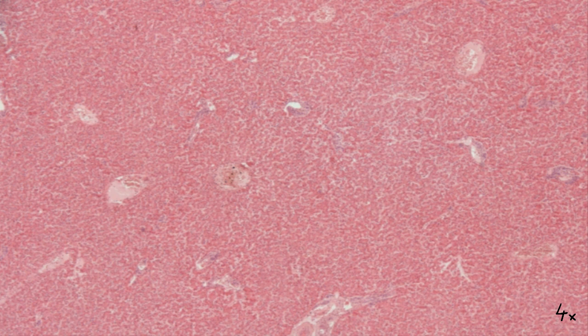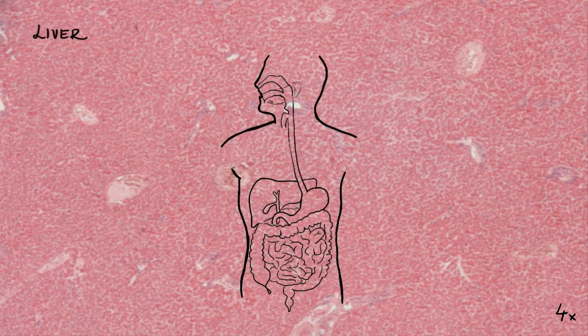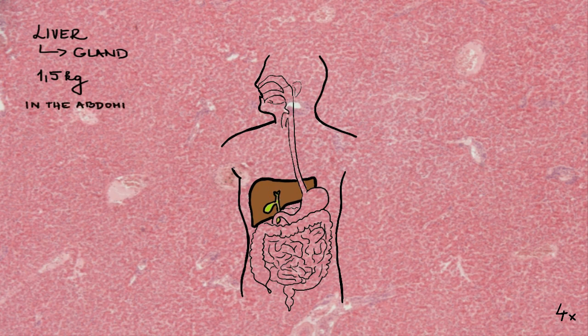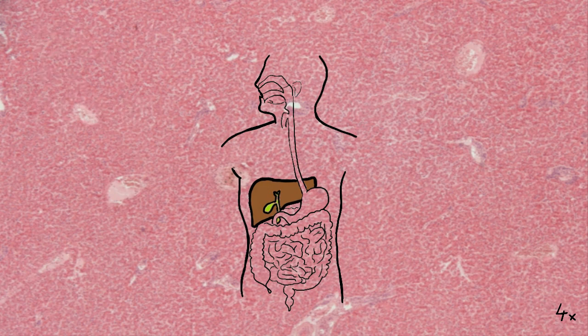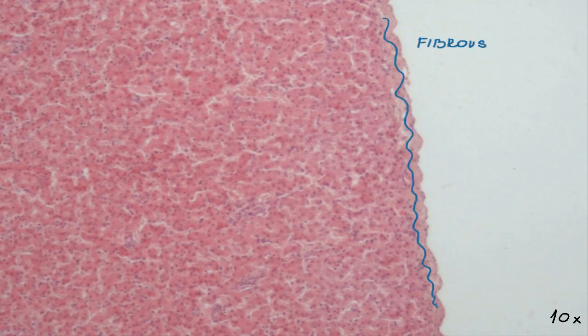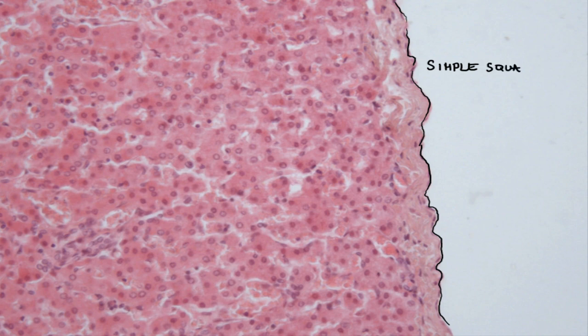Hello, welcome to this video about the histological structure of the liver. Liver is the greatest gland in the entire human body. It weighs about 1.5 kilograms and is located within the abdominal cavity beneath the diaphragm on the right side of the body. The liver is covered by a thin fibrous capsule which is derived from the peritoneum, and thus it is covered by simple squamous epithelium — mesothelium.